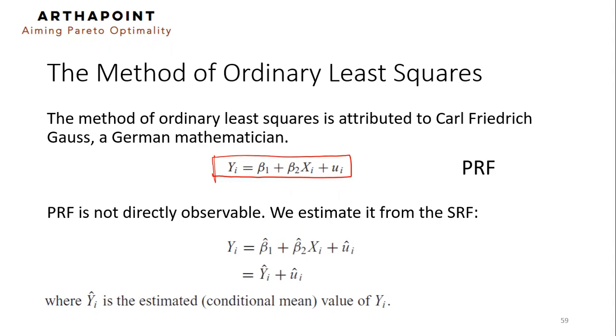YI is beta 1 plus beta 2 XI plus UI, where this part right here is expected value of Y given XI plus UI, this gives you UI.